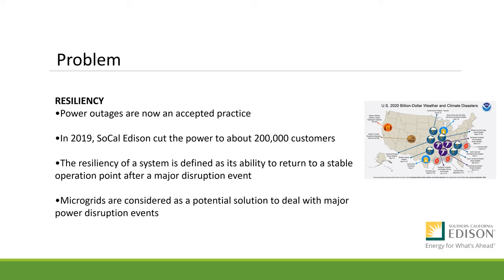What is the problem? Power outages are now an accepted practice. In 2019, SoCal Edison cut the power to about 200,000 customers. The resiliency of a system is defined as its ability to return to a stable operation point after a major disruption event, such as fires, earthquakes, and other natural disasters. Microgrids are considered as a potential solution to deal with major power disruption events.